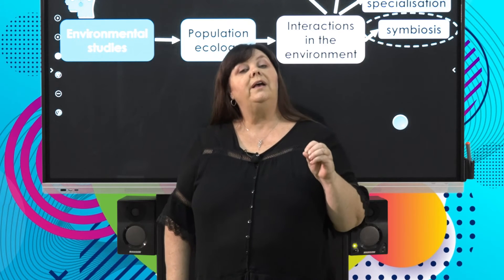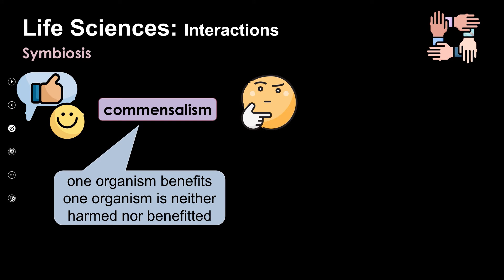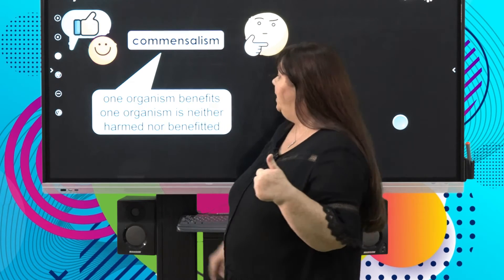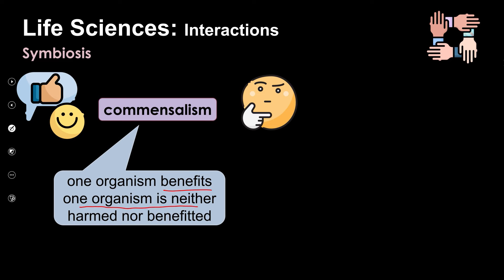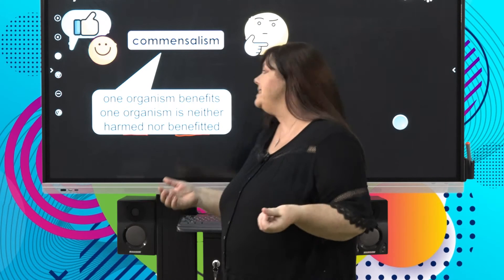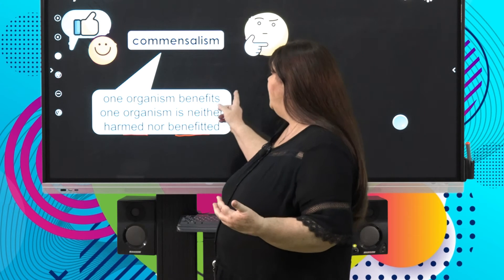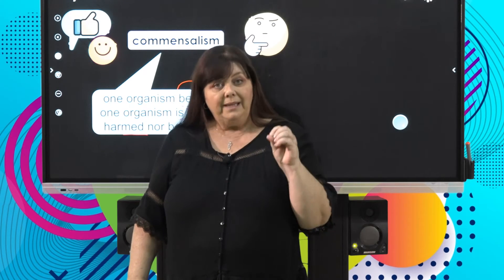In commensalism, one organism benefits — thumbs up — but the other organism is not harmed and doesn't benefit either. It's kind of 'whatever' — it doesn't hurt me, doesn't benefit me, just let it carry on. In commensalism, one organism benefits but it's not harming the other organism in any way, and it's also not benefiting them.